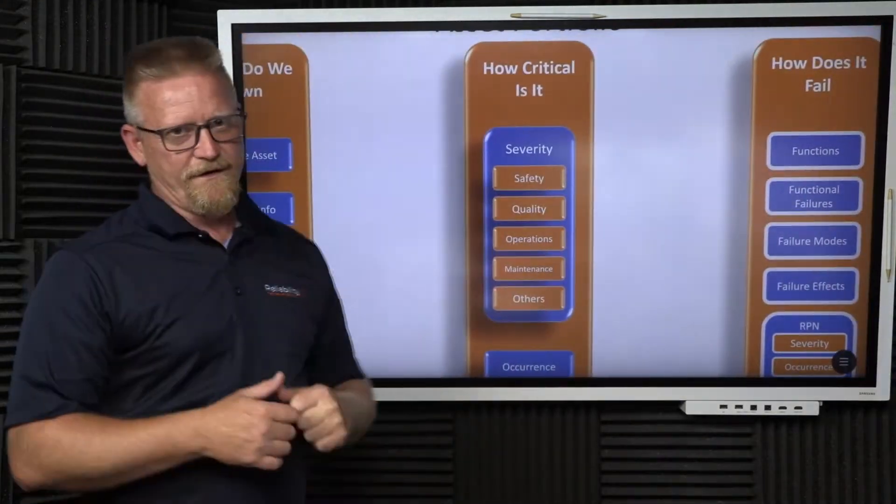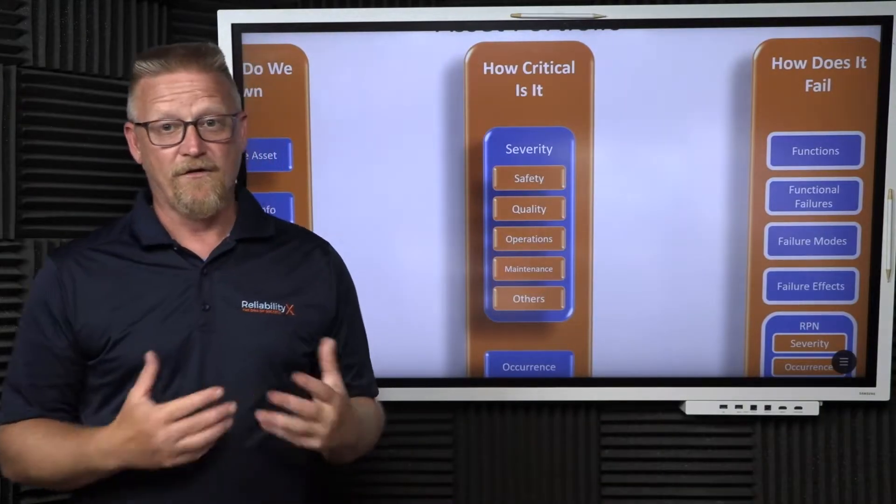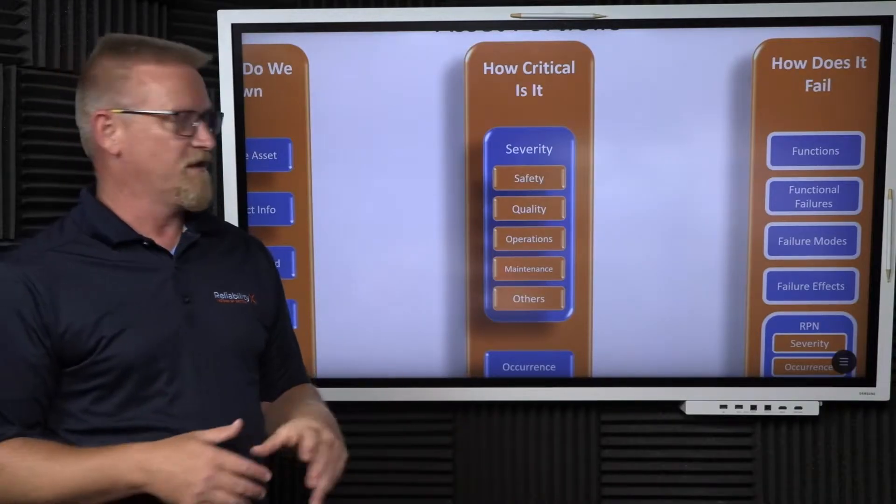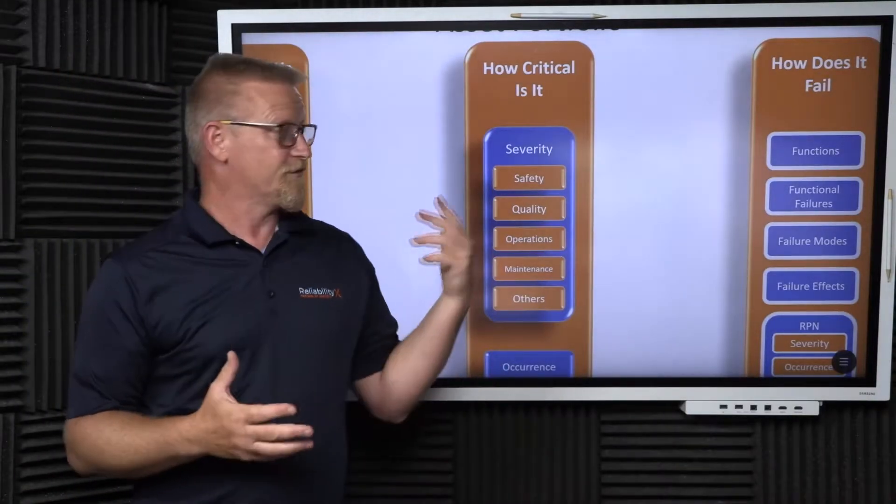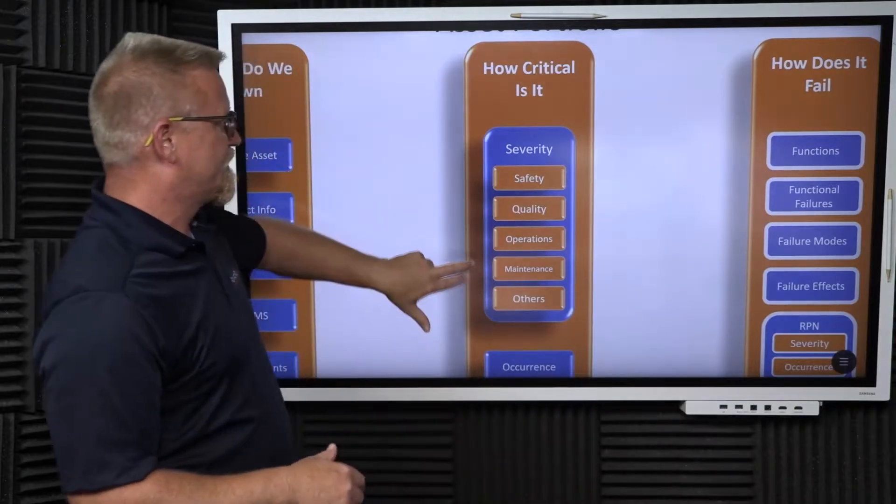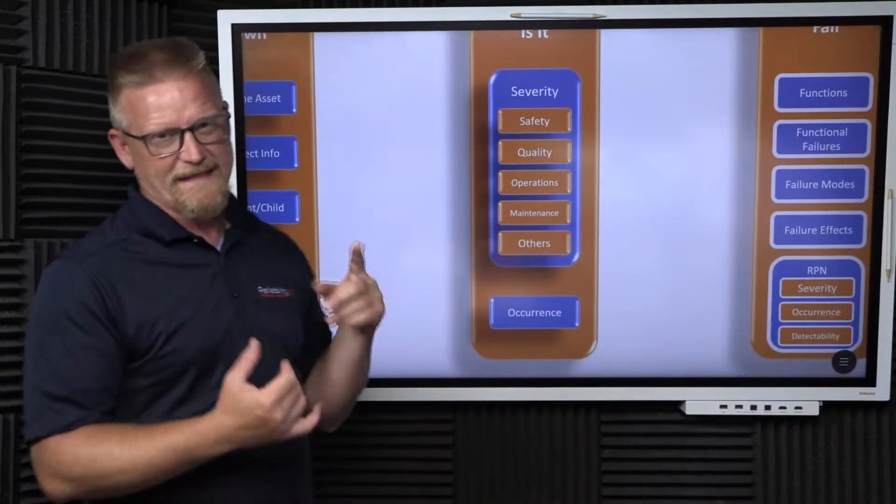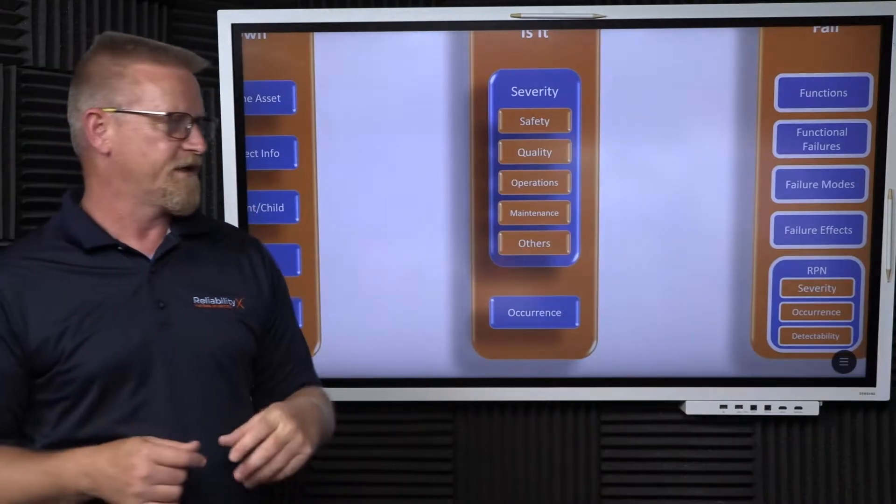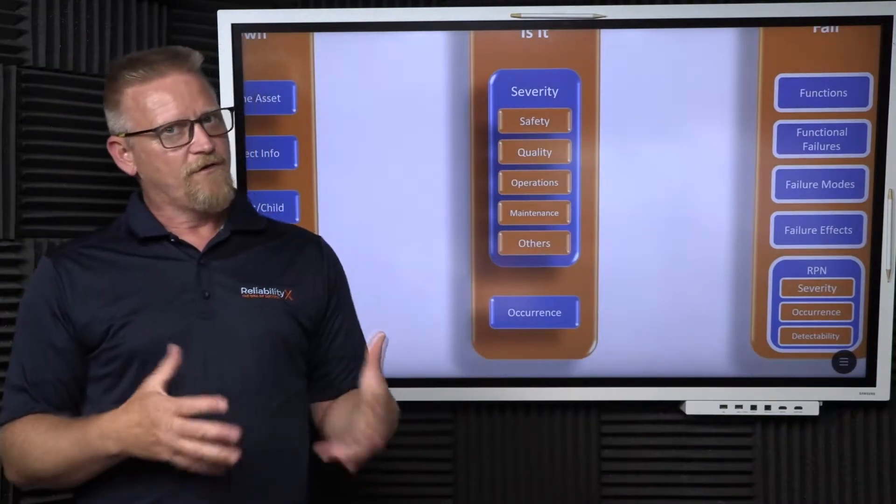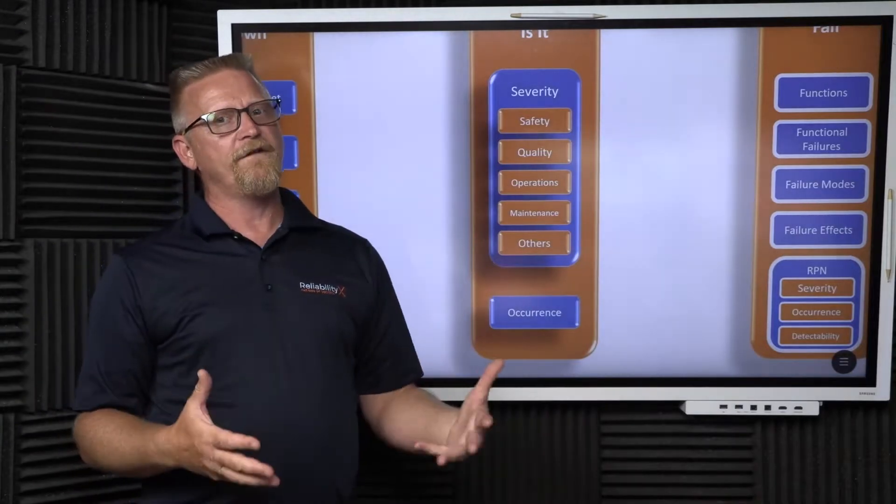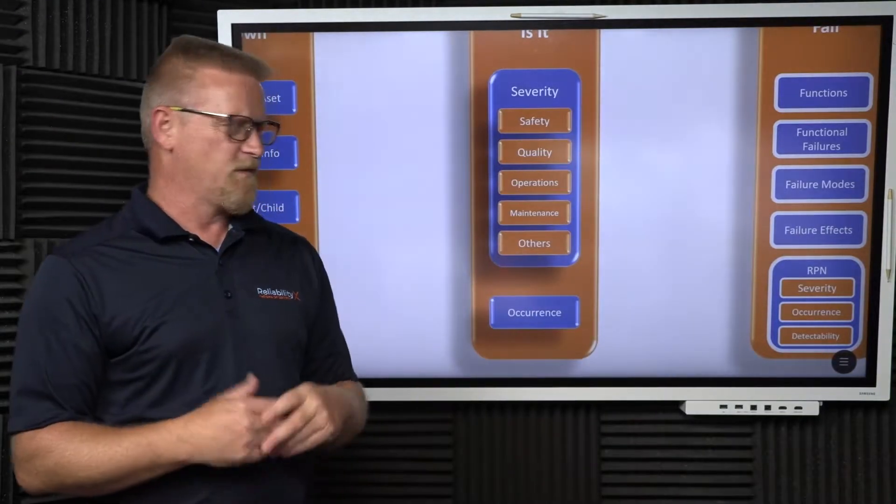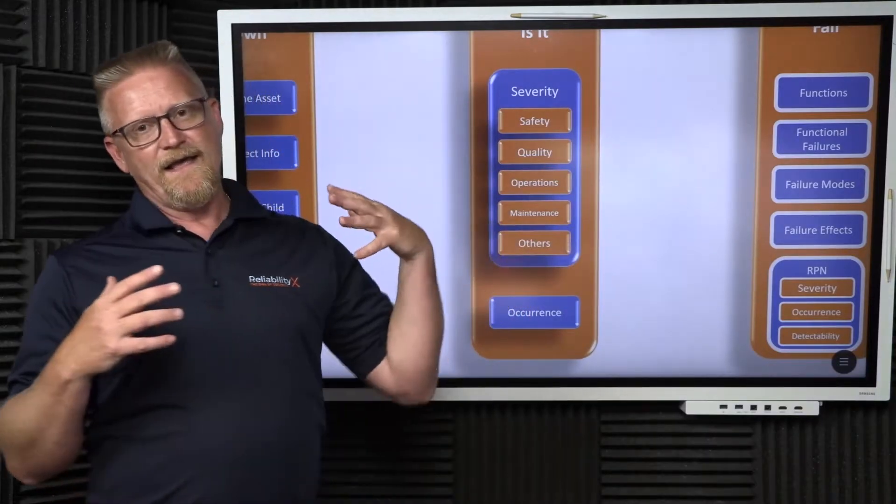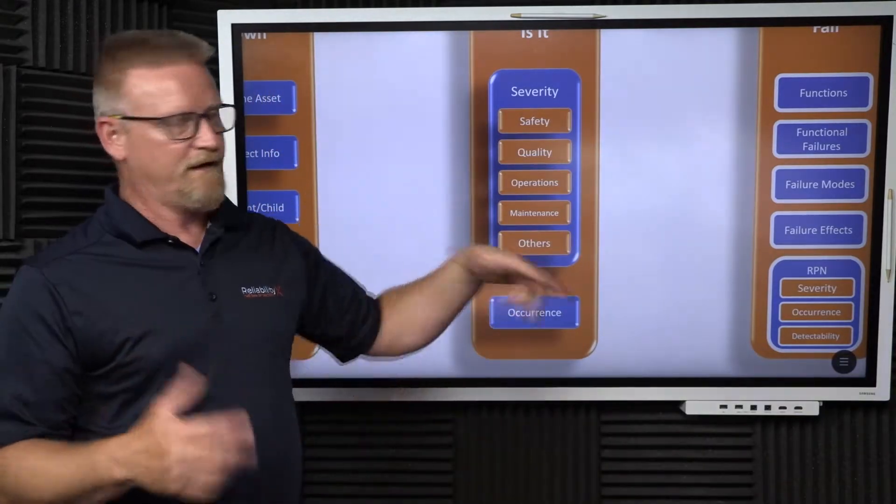From there, we then have to understand how critical is it. How critical is it is a function of its severity and its occurrence, how often it is likely to fail, and what is the impact or severity when it does fail. Severity is made up of factors like safety impact, quality impact, impact on maintenance or production and operations. We figure all those things out, figure out how often this piece of equipment fails, what's its mean time between failure based on the various functions, and we determine its criticality.